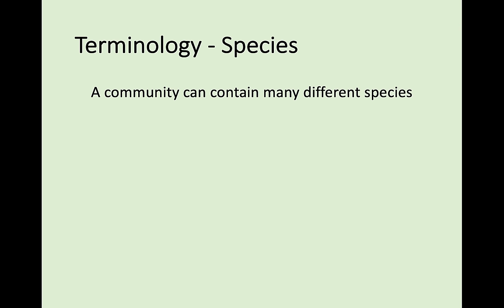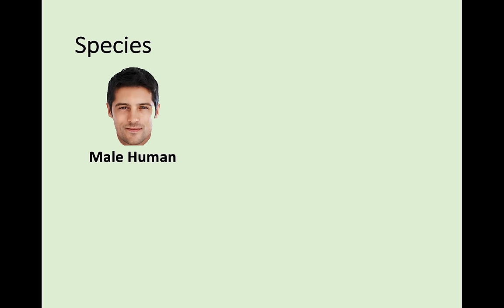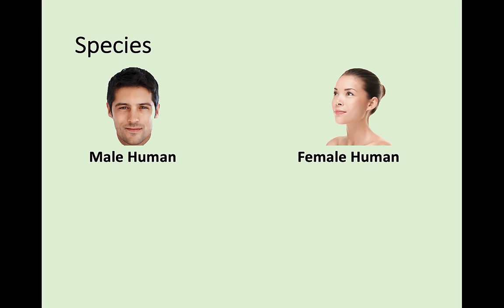When looking at species, a species is a group of organisms that can interbreed in order to produce fertile offspring. You need to know the exact definition of species. Essentially, a species can reproduce together, and the offspring they produce can also have offspring — that's what fertile means. Infertile means you cannot have offspring. For example, a male and female human reproduce to produce a human, who will also be able to reproduce.